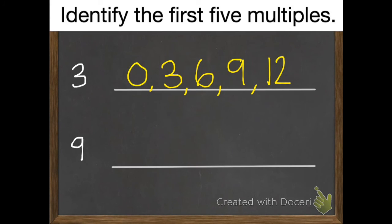And the first 5 multiples of 9 are 0, 9, 18, 27, and 36.